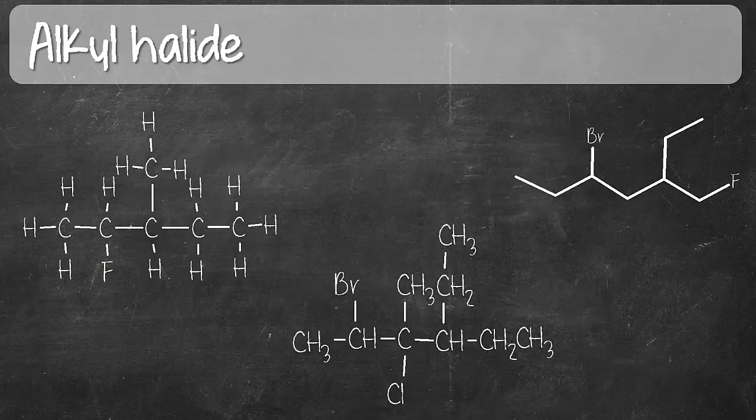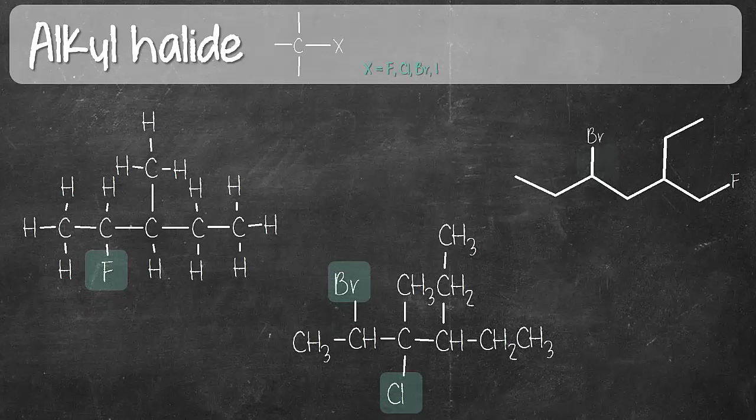Last but not least, we have alkyl halide. Alkyl halide is a hydrocarbon derivative. It's actually an alkane with one of the hydrogen in alkane removed and replaced with a halogen like fluorine, chlorine, bromine, or iodine. And sometimes you may encounter alkyl halide as haloalkane. They are all referring to the same types of organic compounds. So in the three examples that are given here, fluorine is present in the first one, bromine and chlorine in the second one, bromine and fluorine in the third one. So these are all representative of alkyl halides.